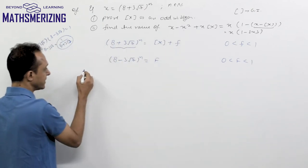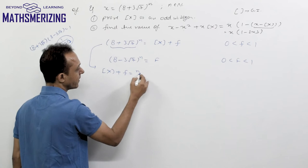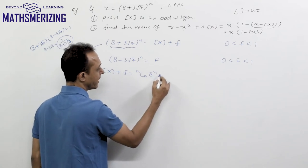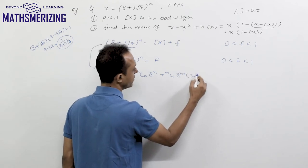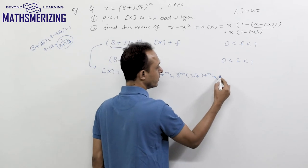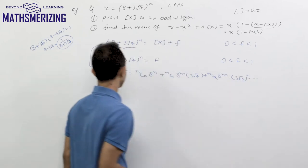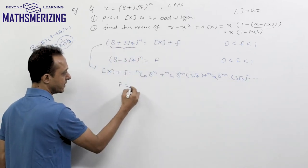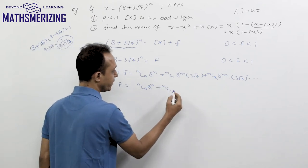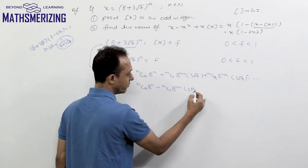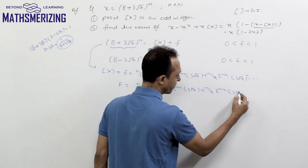Expanding the two series: from the first, [x] + f = C(n,0)·8^n + C(n,1)·8^(n−1)·(3√7) + C(n,2)·8^(n−2)·(3√7)² + ... and from the second, capital F = C(n,0)·8^n − C(n,1)·8^(n−1)·(3√7) + C(n,2)·8^(n−2)·(3√7)² − ...